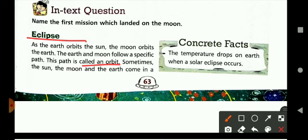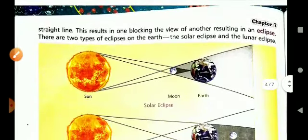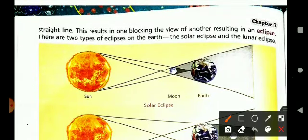Sometimes the sun, the moon, and the earth come in a straight line. This results in one blocking the view of another, resulting in an eclipse.